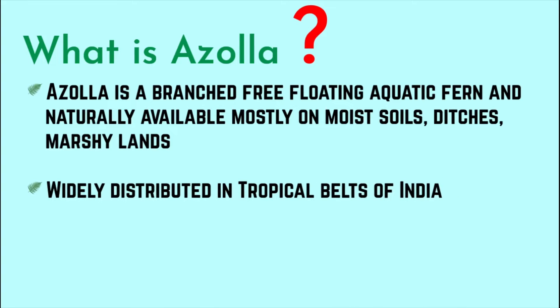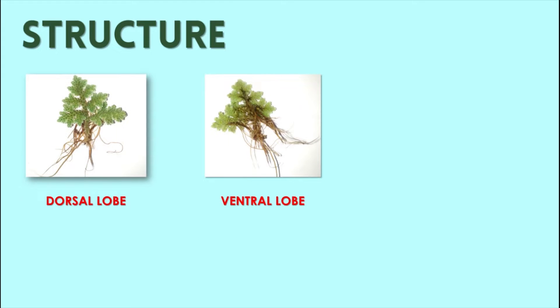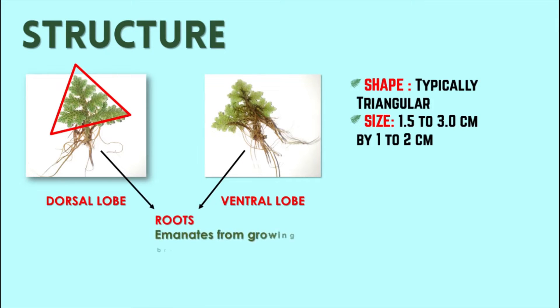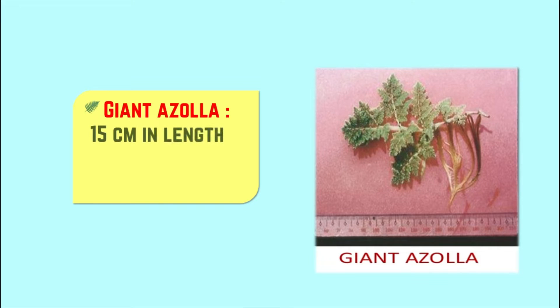Azolla is widely distributed in tropical belts of India and grows in freshwater. Its structure has two main parts — the dorsal lobe and ventral lobe — typically triangular in shape, 1.5 to 3 centimeters in length and 1 to 2 centimeters in breadth. Roots emanate from growing branches and remain suspended in water, while the dorsal lobe is exposed to air. There is also a giant Azolla species with a length of up to 15 centimeters.